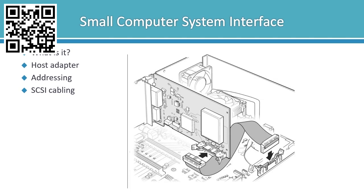Here are a couple of technical facts about Small Computer System Interface. When using SCSI cabling, the wider the cable, the higher the transfer rate as the data path is increased. In terms of size and capacity, LVD or Ultra 2 SCSI has a transfer rate of 80 MB per second. SCSI 1 is 5 MB per second, Fast Wide SCSI 2 is 20 MB per second, and Ultra SCSI is 20 MB per second.